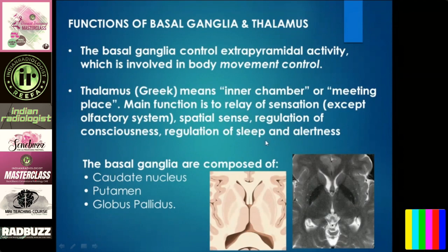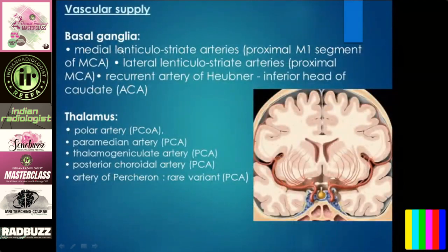The components of basal ganglia mainly include the caudate nucleus, the putamen, and the globus pallidus. Briefly about the vascular supply: the basal ganglia is mainly supplied by the proximal M1 segment of the MCA and other branches from the ACA for the caudate. The thalamus is supplied predominantly by the posterior circulation.